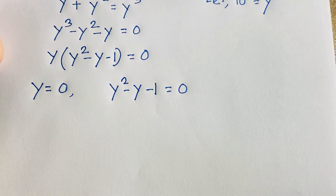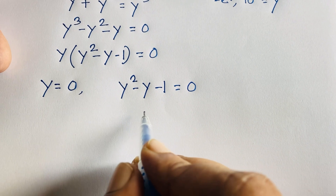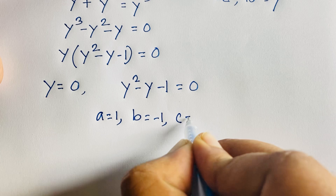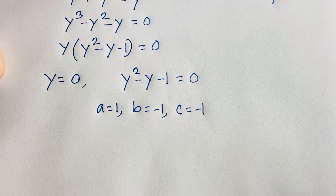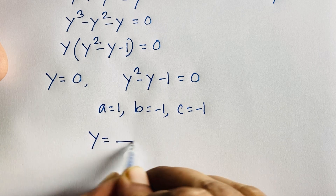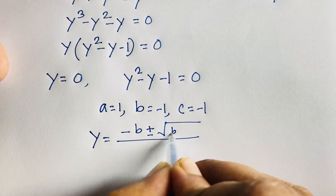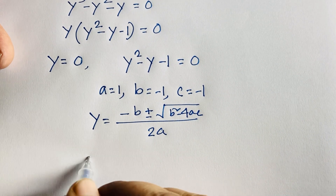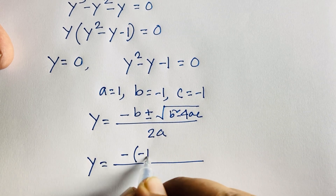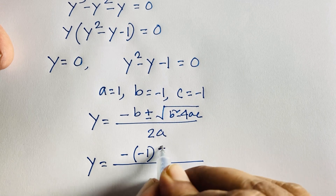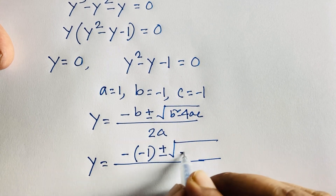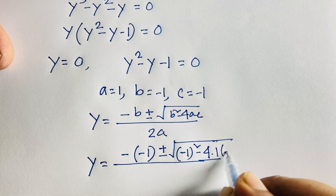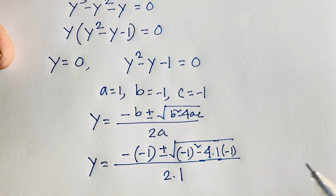Now we find the value of y from the quadratic equation y² minus y minus 1 equals 0. Here a equals 1, b equals minus 1, and c equals minus 1. Using the quadratic formula, y equals (minus b ± √(b² minus 4ac)) over 2a. Substituting: y equals (minus(minus 1) ± √((minus 1)² minus 4·1·(minus 1))) over 2·1.